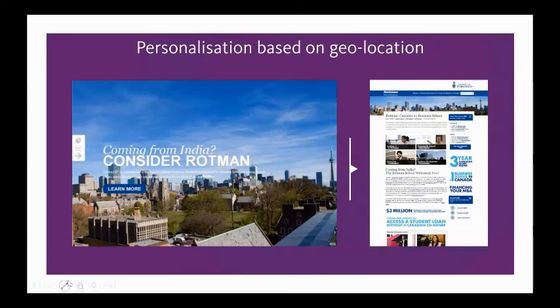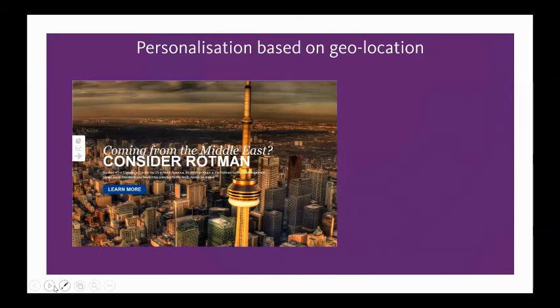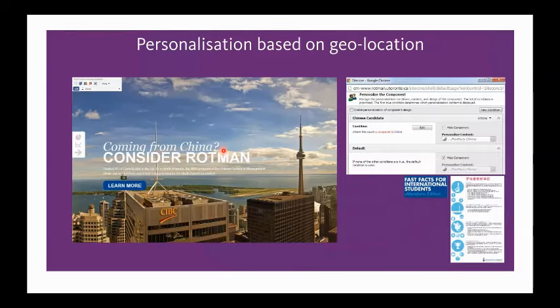They repeated that process for the Middle East, targeting students there because they tend to be high-value and high-performing students — important for a top university maintaining its levels of performance. The system enables you to say: if this person has come from the Middle East, show them this banner rather than the generic home-based banner which is of minimal particular interest to them. The same approach applies to attracting students from China, another target market they're pursuing.